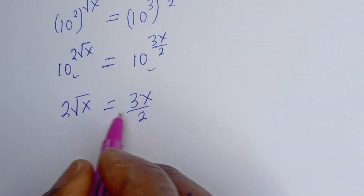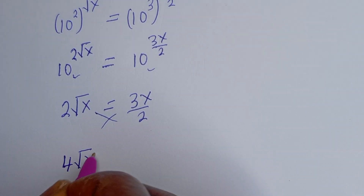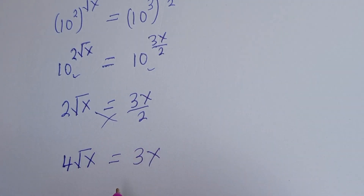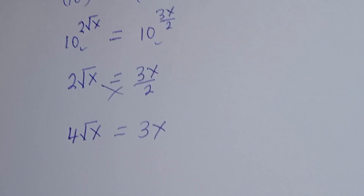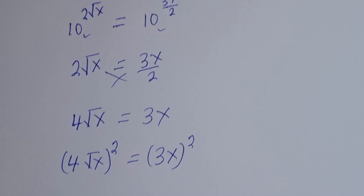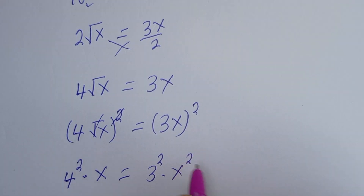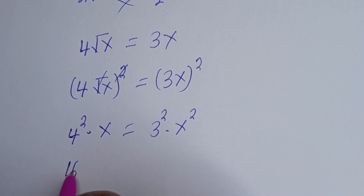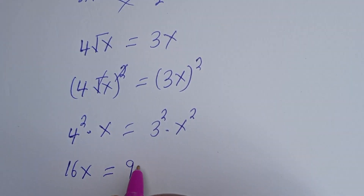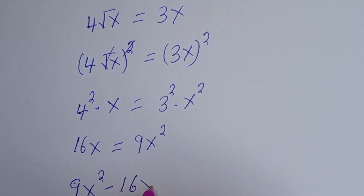Cross multiplying, we have 4 times root s is equal to 3s. Then squaring both sides of this equation, we get 16s is equal to 9s squared.